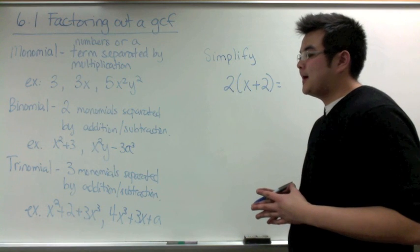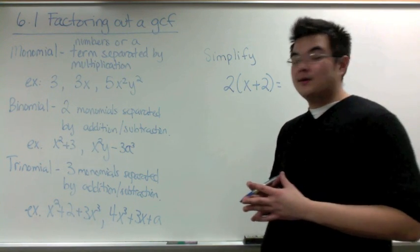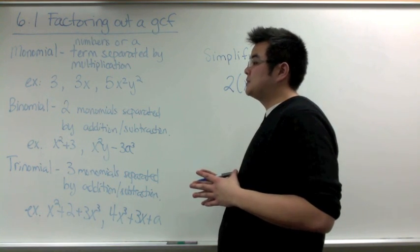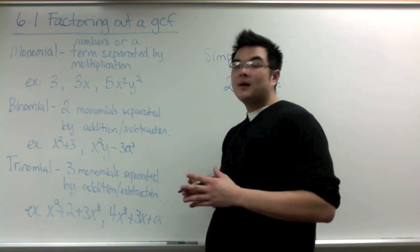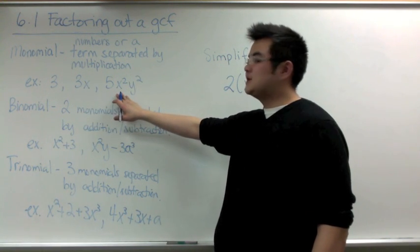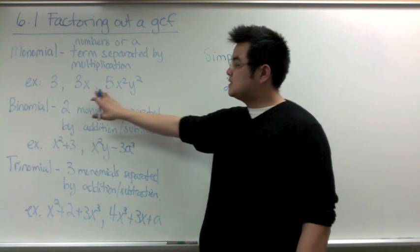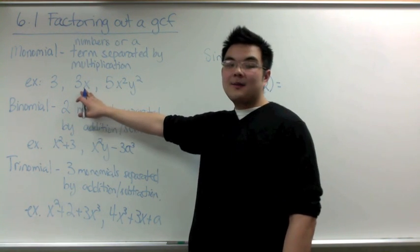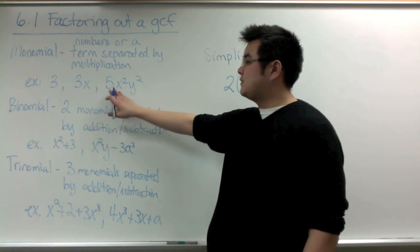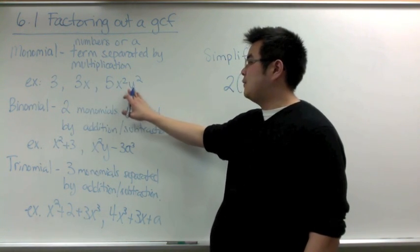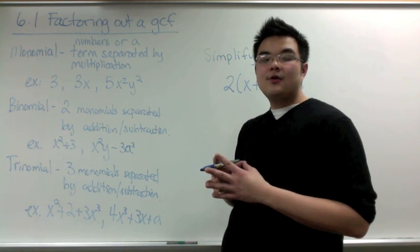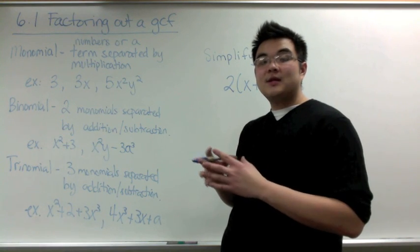In order to go over what a binomial and trinomial is, you need to know what a monomial is. A monomial is numbers or a term separated by multiplication. So for example, 3 is a monomial, 3x is a monomial, and 5x²y² is also a monomial. Even though 5x²y² has three parts to it, it's still considered a monomial because all three parts are separated by multiplication.